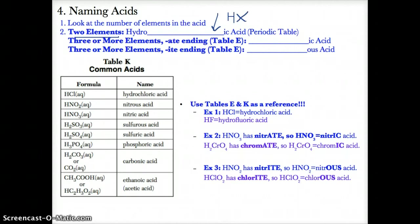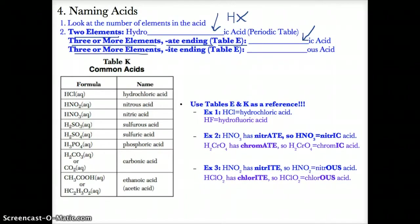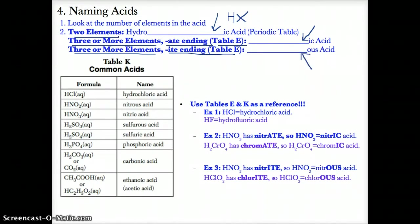A quick summary of the rules: if you have two elements, go hydro-blank-ic acid, where blank is for the unique element after H. If you have three or more elements and the polyatomic ion has an -ATE ending on table E, name it blank-IC acid, where blank is the root name before -ATE. If you have three or more elements and the polyatomic ion has an -ITE ending from table E, name it blank-OUS acid.